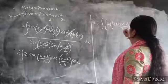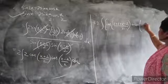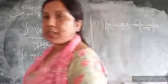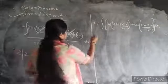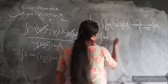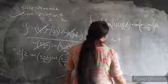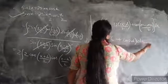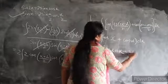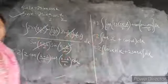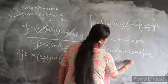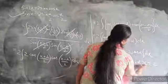So remember that 2cosA cosB equals cos(A plus B) plus cos(A minus B). Applying this, 2cos((x plus α)/2) cos((x minus α)/2), the x terms add and the alpha terms cancel, giving cosα plus cosx. So the integral becomes integration of (2cosα plus 2cosx) dx, which equals 2cosα times x plus 2sinx plus c.